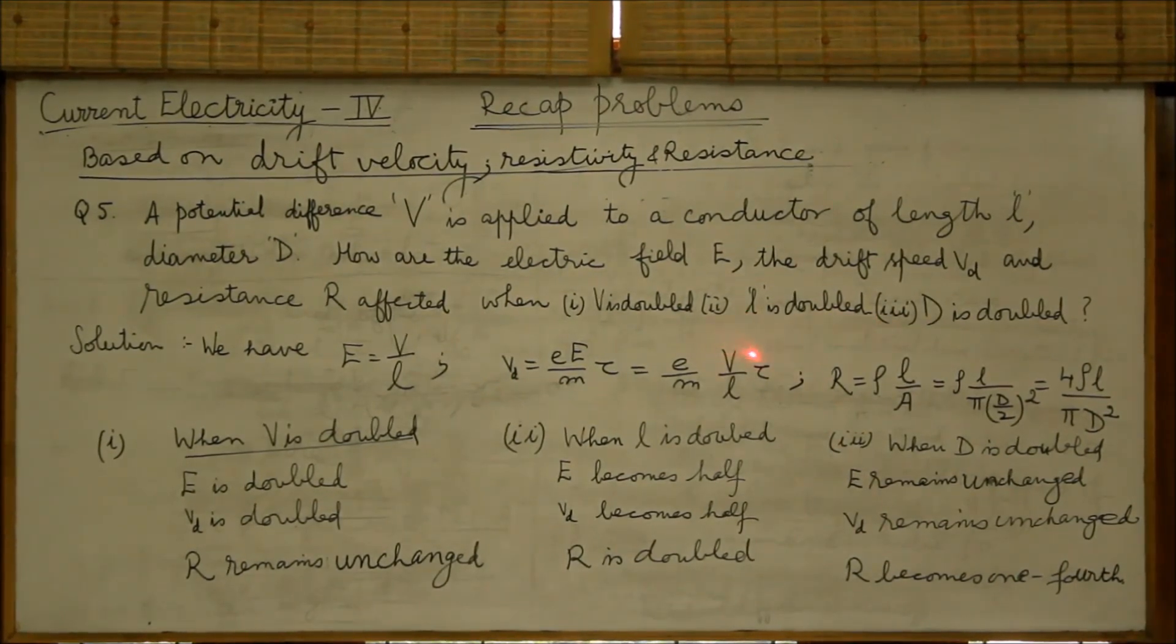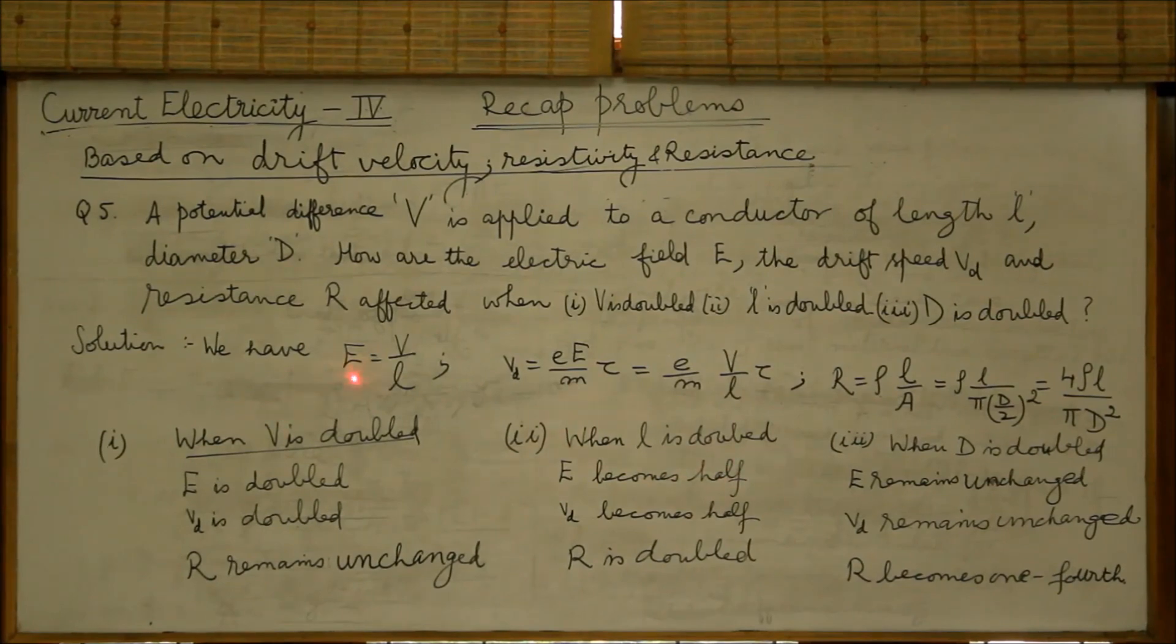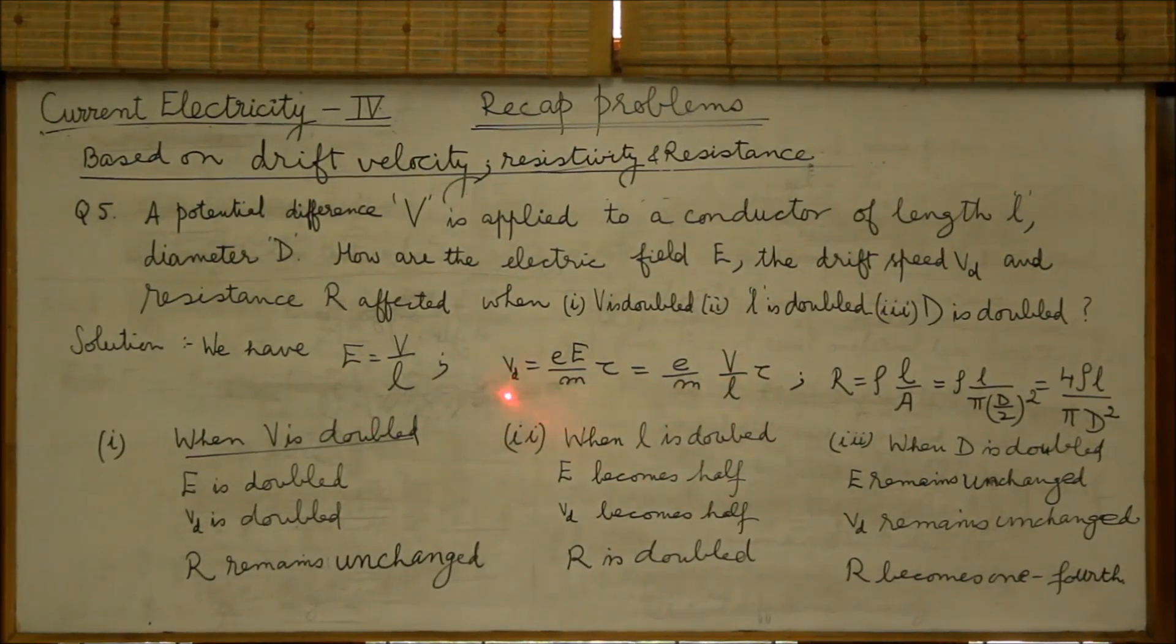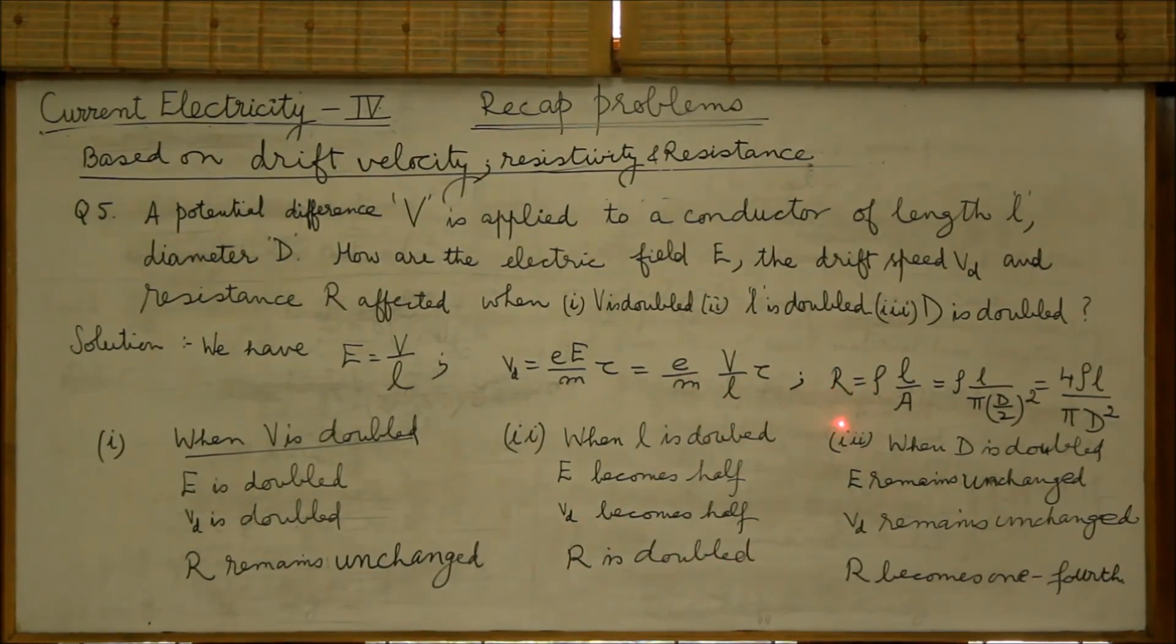Coming to second part, when L is doubled, E will become half. V D will also become half. And R will be doubled because resistance is directly proportional to length.